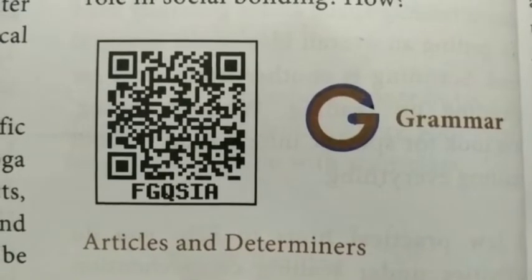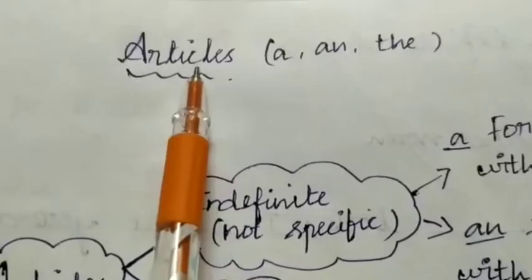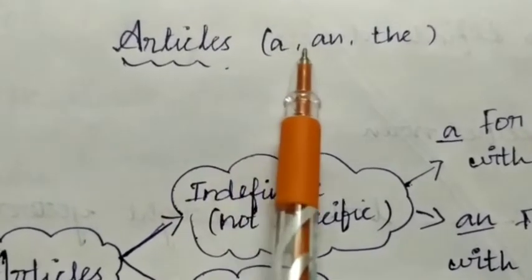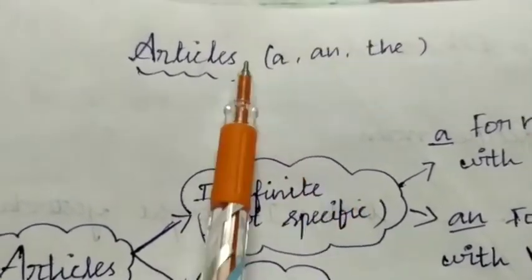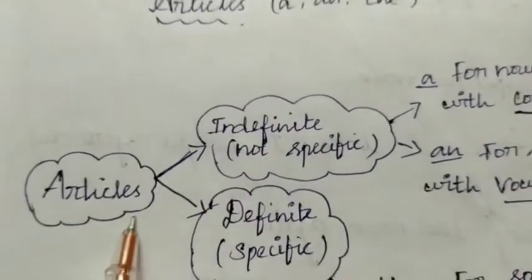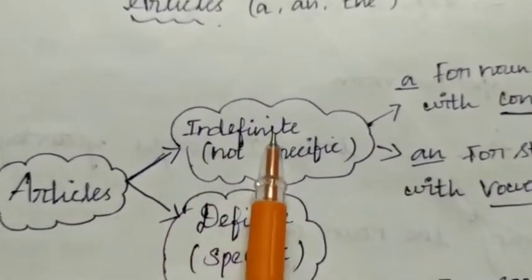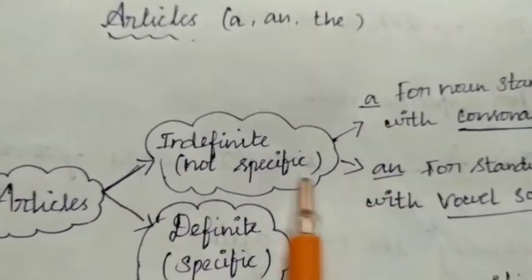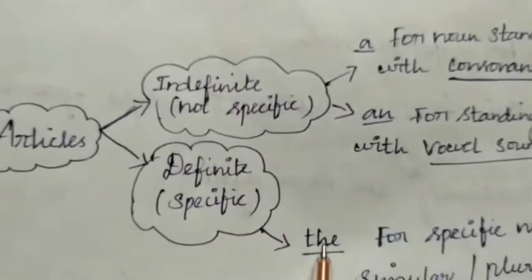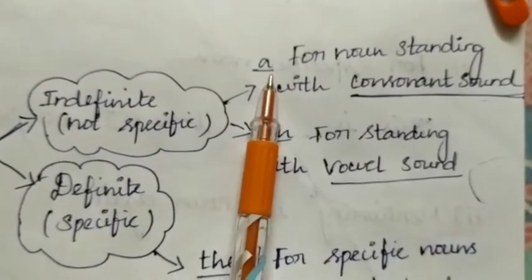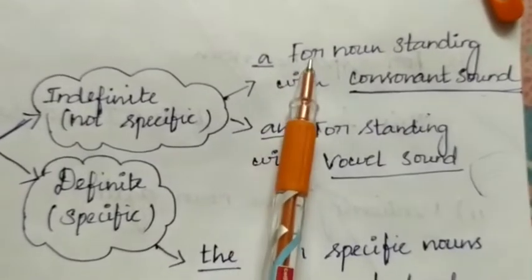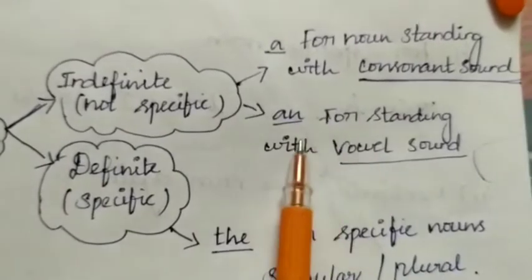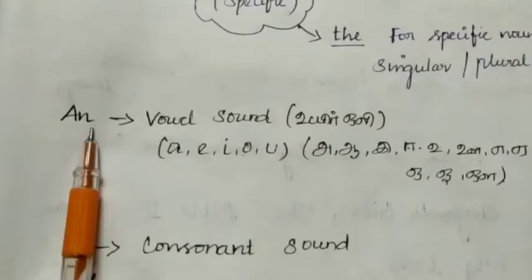Let's see articles and determiners and their types. An article is divided into two types: indefinite article and definite article. We have to use 'a' for nouns standing with a consonant sound, and 'an' for nouns standing with a vowel sound.